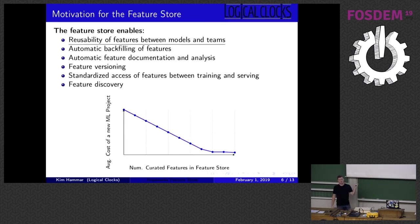Some of the things that we're trying to achieve with the feature store are things like feature versioning, automatic feature documentation and analysis, and also feature backfilling. But the main point of the feature store, at least in my opinion, is this first one in the list, which is that by using a feature store, it becomes much simpler to reuse features across different models and across different teams.